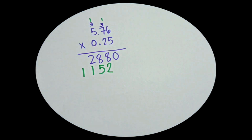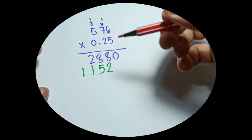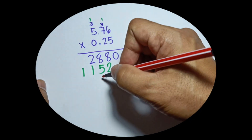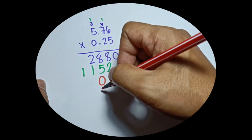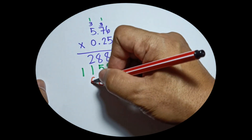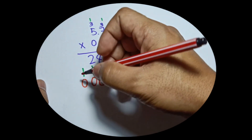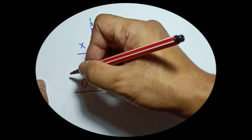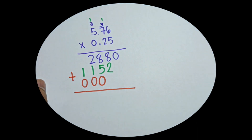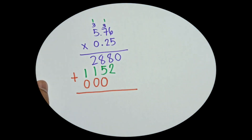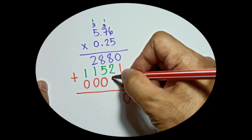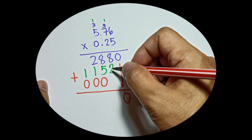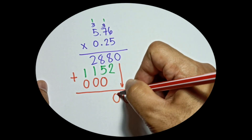Now for the third digit, which is 0: 0 times 6 is 0, write the answer on the third line. 0 times 7 is 0, and 0 times 5 is 0. Now add them all — bring down 0 here, then 8 plus 2 is 10, carry 1.